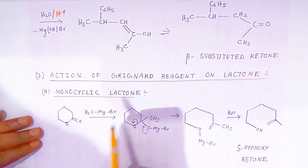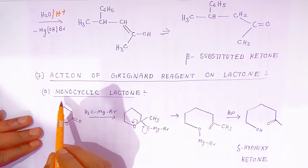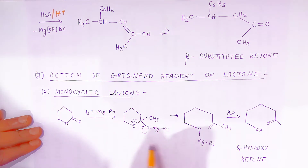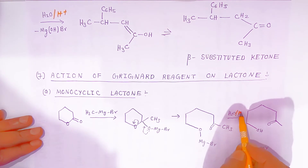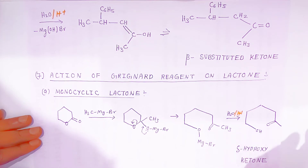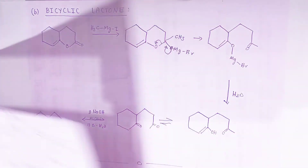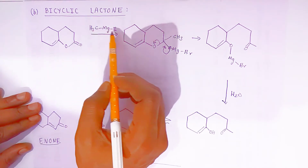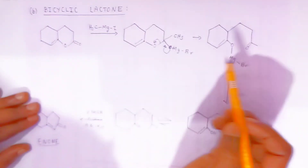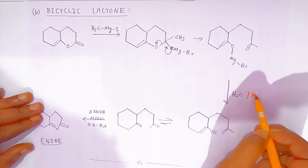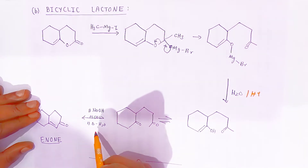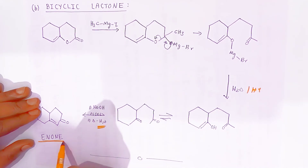Action of Grignard reagent on lactones: with monocyclic lactone, when it reacts with Grignard reagent, an addition product is formed, and on acidic hydrolysis, delta-hydroxy ketone is obtained. With bicyclic lactone, when it reacts with methyl magnesium halide (Grignard reagent), an addition product is formed. On acidic hydrolysis, a compound is obtained which, on treatment with NaOH and aldol condensation, eliminates water and is converted into an enone.